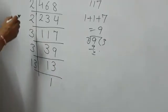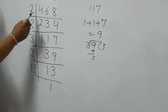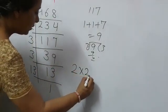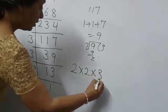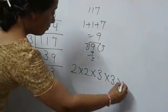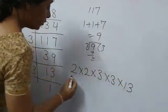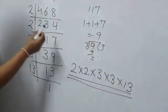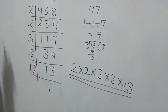Now the prime factors of 468 are 2 multiplied by 2, multiplied by 3, multiplied by 3, multiplied by 13. So these are all the prime factors of the number 468.